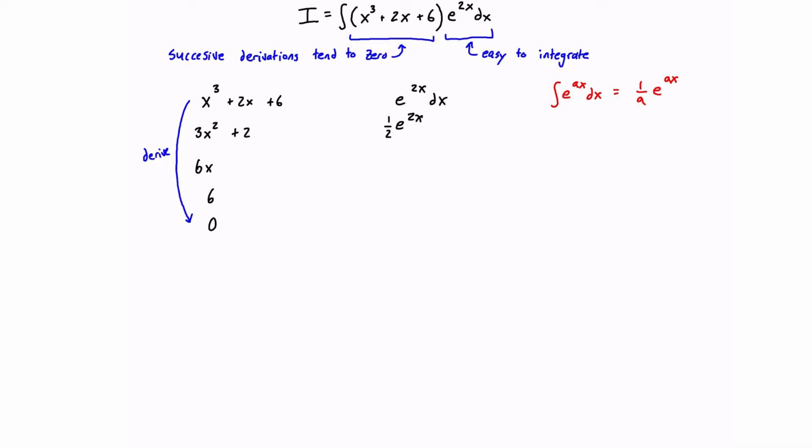We're going to take successive integrations of this, so we're going to apply it again. And we're just going to find that this is just going to be 1/4 e^(2x). And then 1/8 e^(2x). And then 1/16 e^(2x).